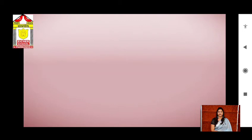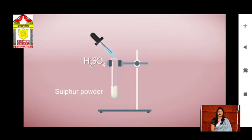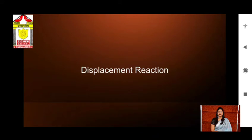Now let's discuss the property that non-metals do not react with acids. Take a little amount of sulfur powder in a test tube and add some drops of dilute sulfuric acid. We observe there is no change in the sulfur powder, meaning non-metals do not react with acids.